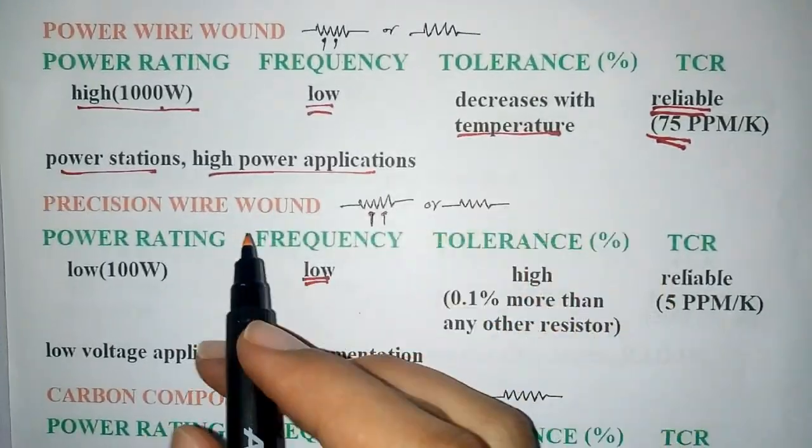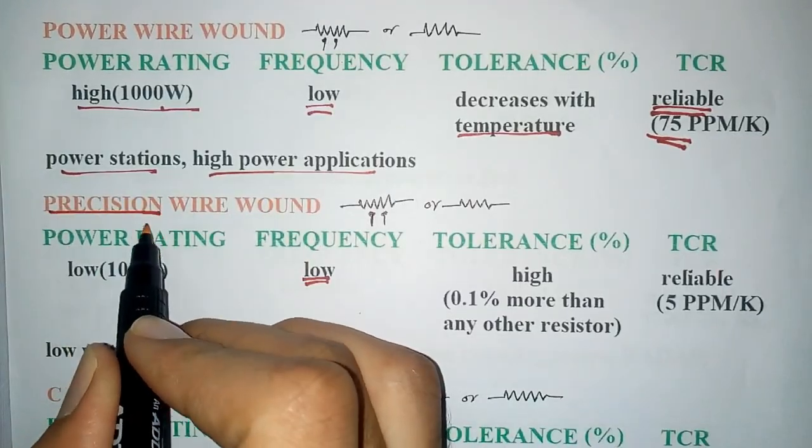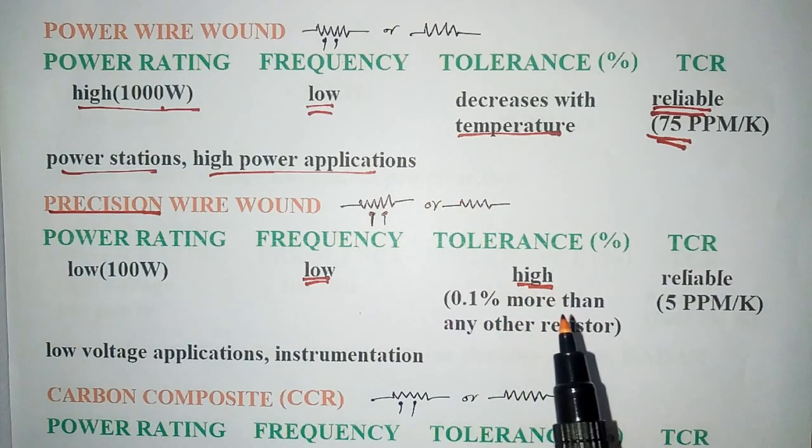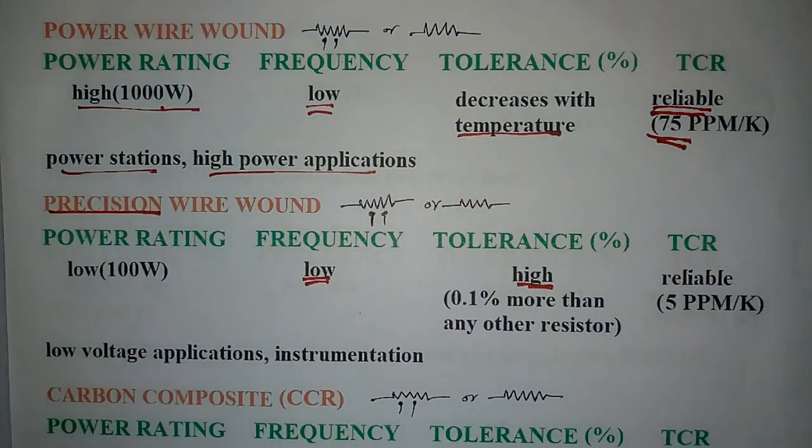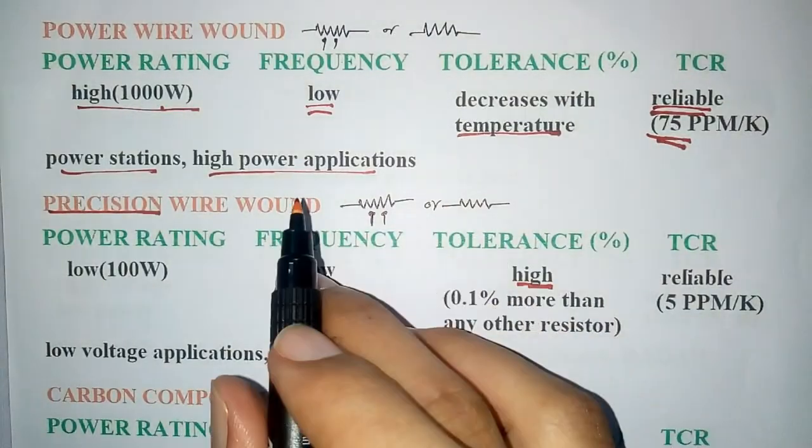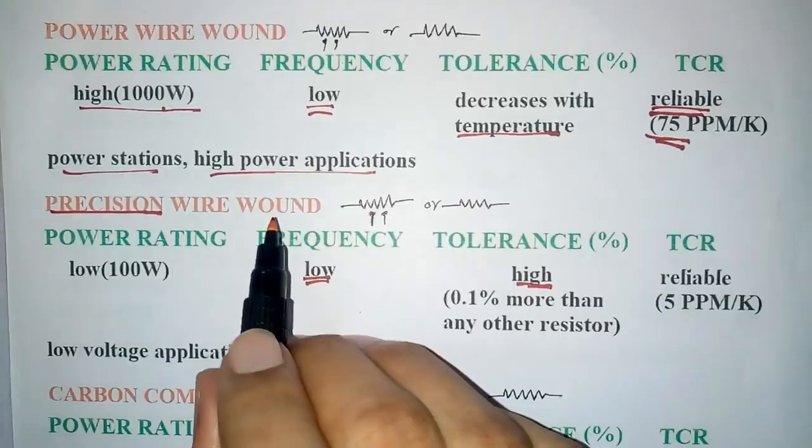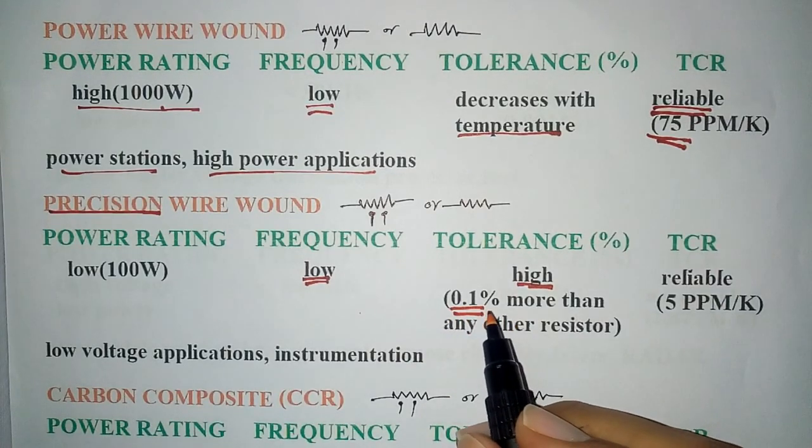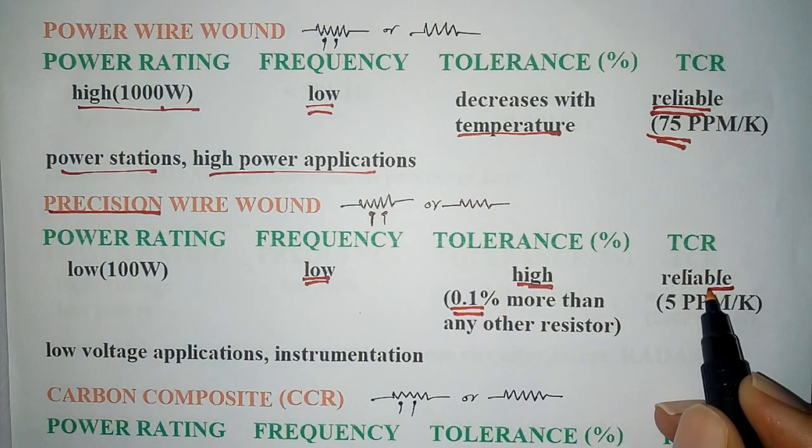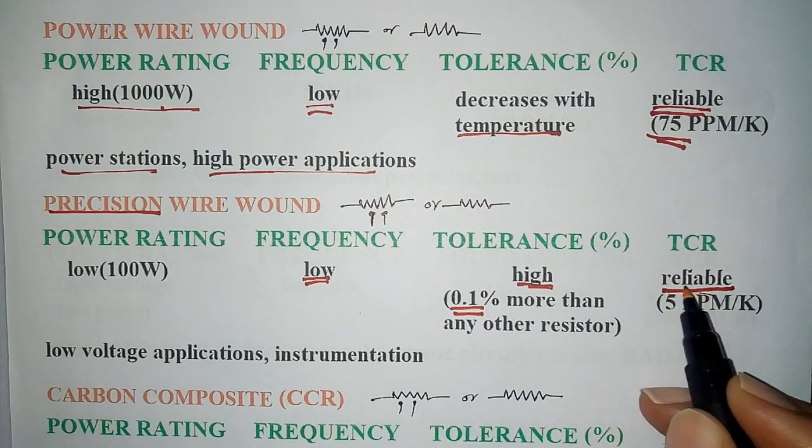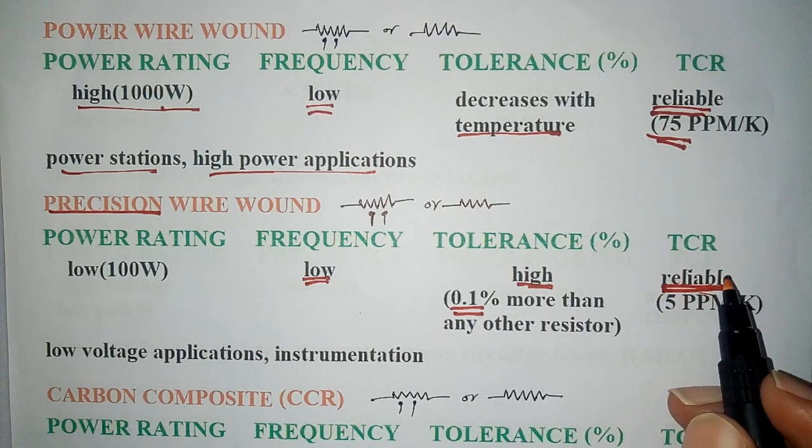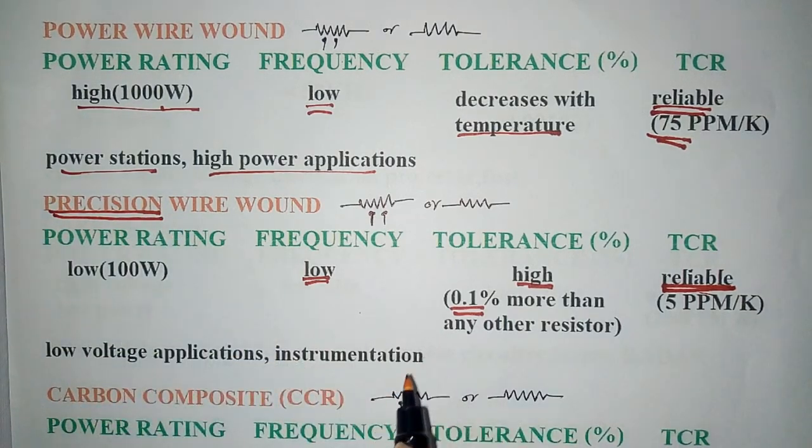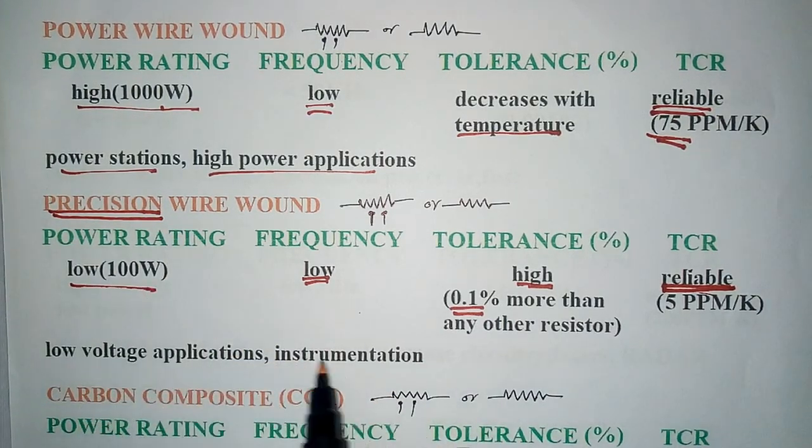Next is precision wire wound. As its name indicates, its tolerance is very high, 0.1%, more than any other resistor. This is the most tolerant resistor. Its TCR is very low, which makes it very reliable. These precision wire wound resistors are used in low voltage applications and instrumentation.